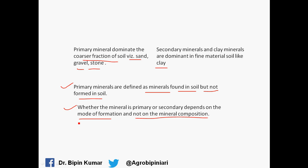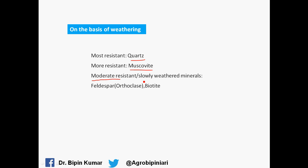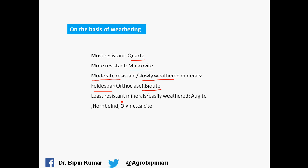Another important fact is that whether a mineral is primary or secondary depends on the mode of formation, not on the mineral composition. We name minerals primary or secondary based on how they form, because they may have the same chemical composition — the only difference is their mode of formation. Regarding resistance to weathering: quartz is the most resistant, muscovite is more resistant, feldspar and biotite are moderately resistant, and augite, hornblende, albite, and calcite are the least resistant.